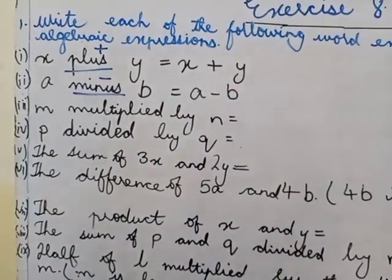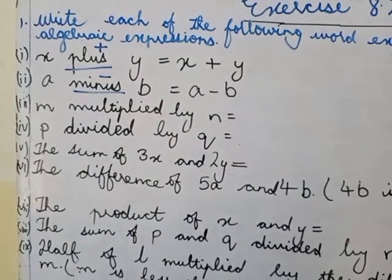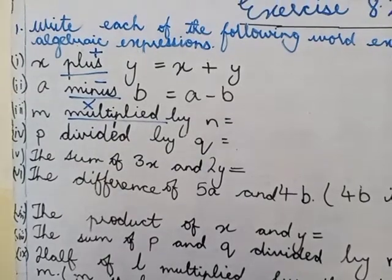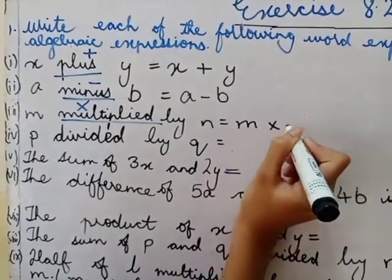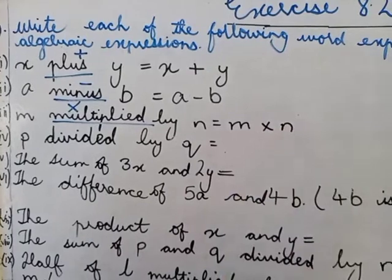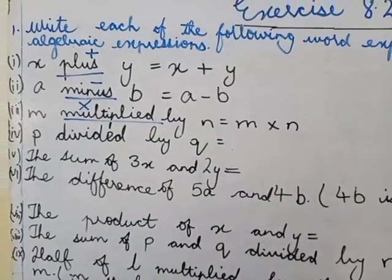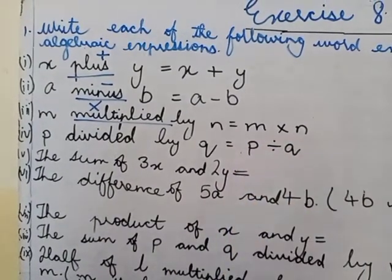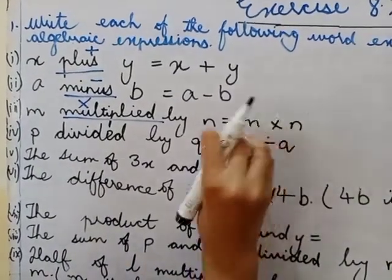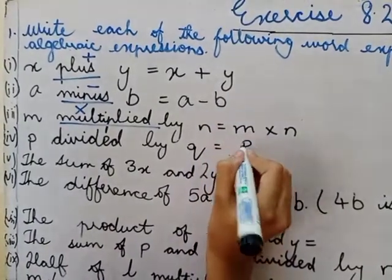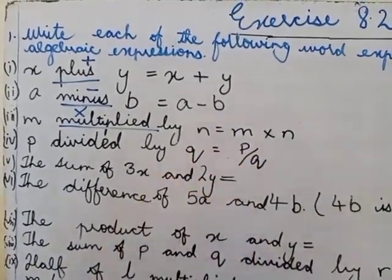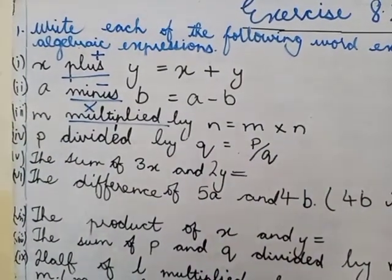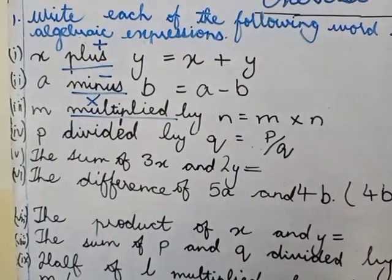The third part is m multiplied by n. The multiplied sign is like this, so we're going to write m multiplied by n. P divided by q. Instead of this we should write p over q. It is also called p divided by q.